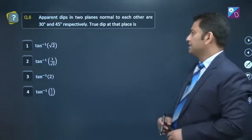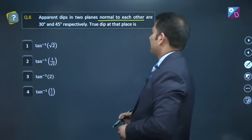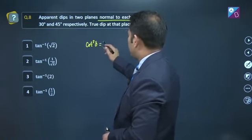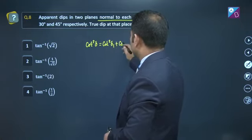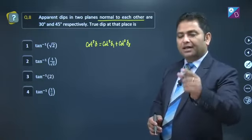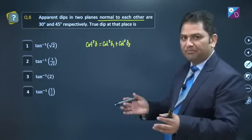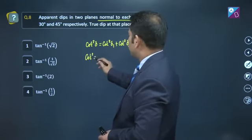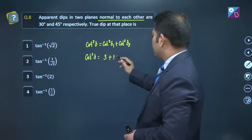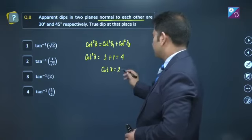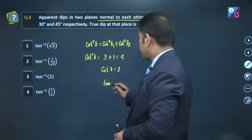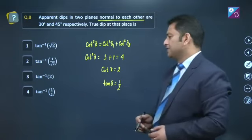Question number 8: Apparent dips in two planes normal to each other are 30° and 45°. True dip at that place - you'll remember the cotangent law: cot²δ = cot²δ₁ + cot²δ₂. What are δ₁ and δ₂? Apparent depths in two normal planes. And what is δ? The true dip. This has become so simple. cot²δ = cot²30 + cot²45 = 3 + 1 = 4, so cot δ = 2. Don't worry, the option is in terms of tan. We can easily customize it. If cot δ is 2, then tan δ is 1/2, so δ is tan⁻¹(1/2), option number 4.